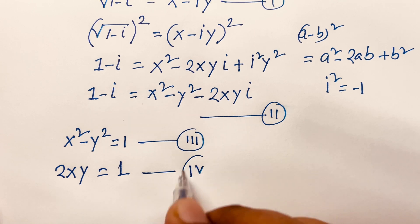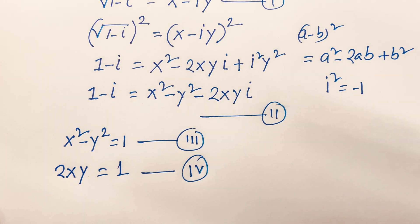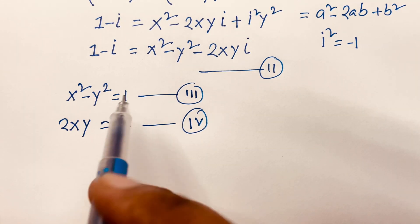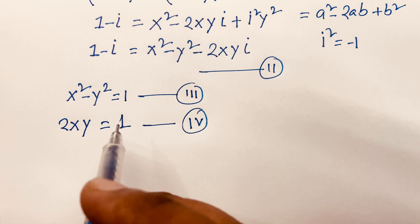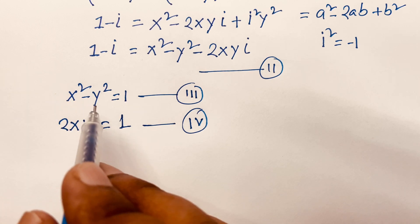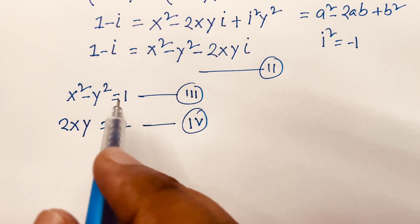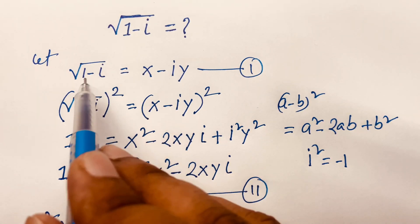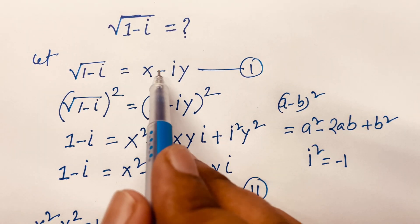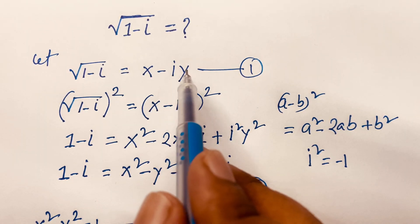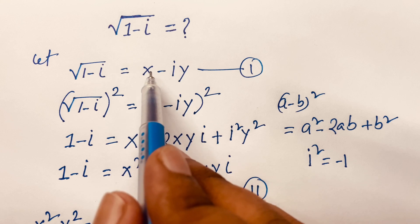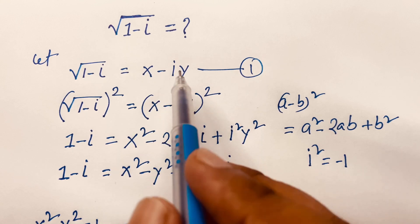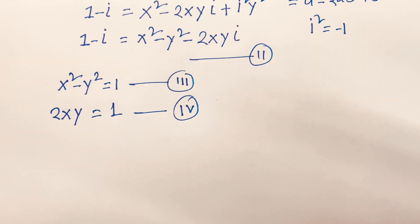That is the fourth equation. Now, x squared minus y squared equals 1. We need to find x squared plus y squared. Because we let this part equal x minus i·y, we need to find the value of x and y.